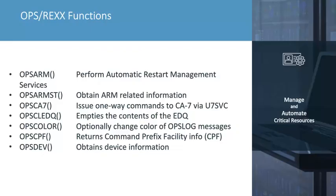As you'll find within the CA OpsMVS documentation, there are approximately 50 OpsMVS built-in functions. From obtaining and performing automatic restart management services via the OpsArm and OpsStatus functions, to querying system devices such as DASD and tape volumes via the OpsDev function, you'll find a wide variety of data obtained by these OpsMVS functions. There is also the OpsCA7 function to issue commands to CA7, and the OpsCPF function to obtain command character prefixes needed to dynamically issue commands to subsystems.